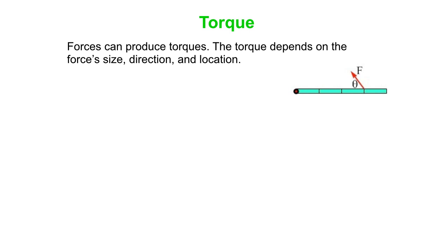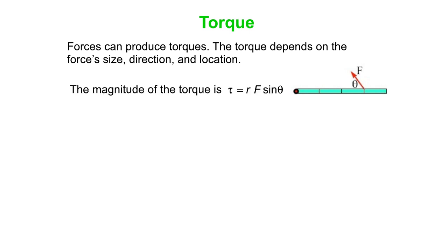Forces can produce torques. The torque depends on the force's size, the force's direction, and the force's location with respect to the axis that the object is rotating about. The magnitude of the torque is tau — that's the Greek letter tau, our symbol for torque — and it equals R times F times sine theta.